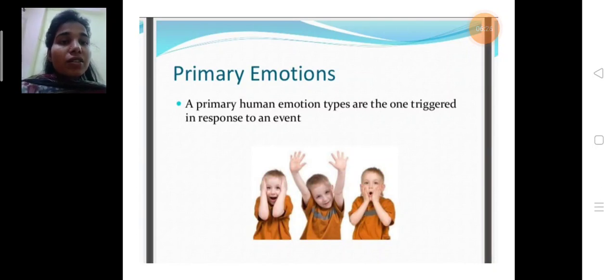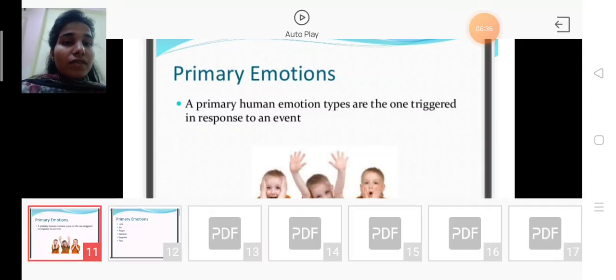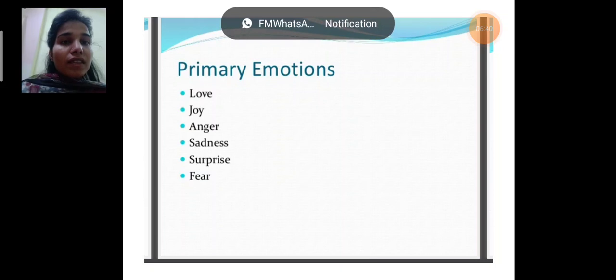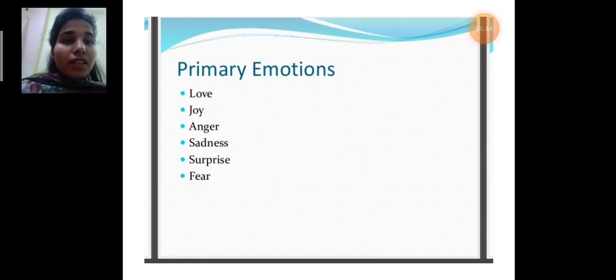A primary human emotion type are the one triggered in response to an event. Primary emotions are love, joy, anger, sadness, surprise, fear.